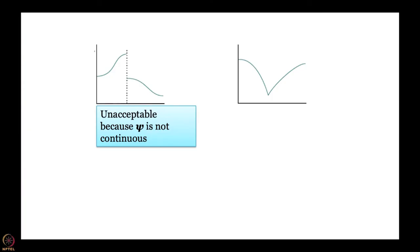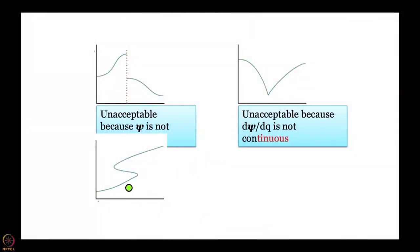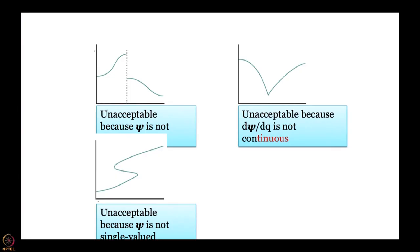What about a function that is continuous but has a sharp break? For most applications it is unacceptable because dψ/dq is not continuous. However, this is not one of the most stringent conditions — there are cases where we are fine with the wave function even though this condition is not met, and we will point those out when we arrive at them. The third type is also not acceptable: at one particular point there are multiple values of ψ — for example 1, 2, 3 different values — which would mean multiple probabilities of finding the particle there. That makes no sense. Multi-valued wave functions are not acceptable; ψ must be single-valued.